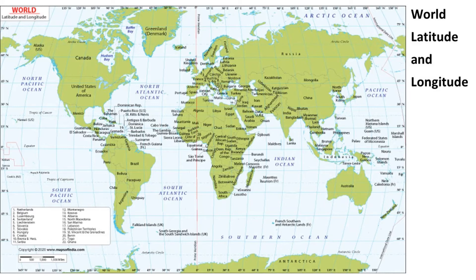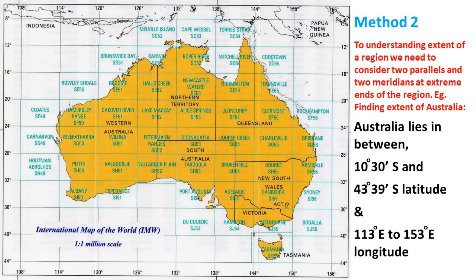Now we'll do an activity. We need to look at Australia — which is in the southern hemisphere and towards the eastern part of the globe. For Method 2, to understand the extent of a region, we need to consider two parallels and two meridians at the extreme ends of the region.